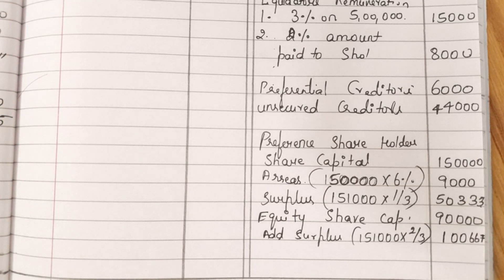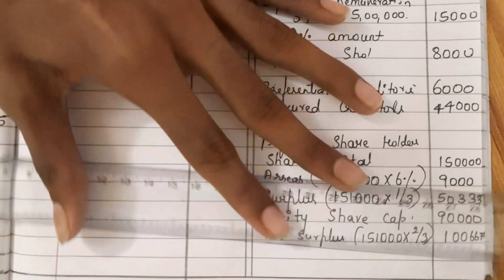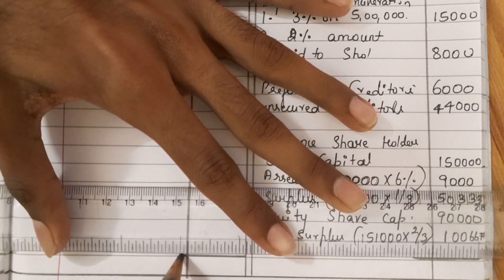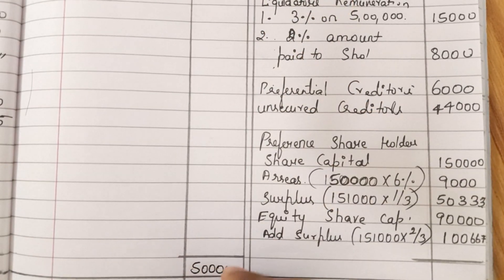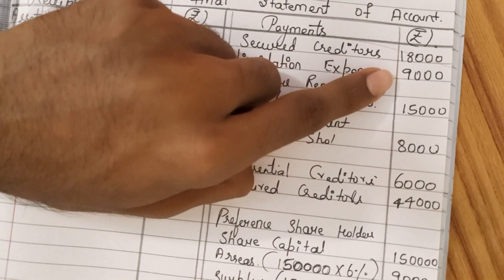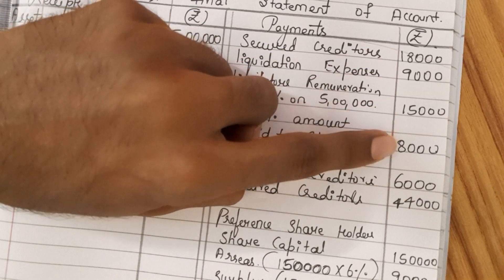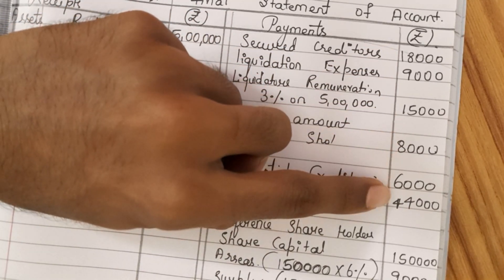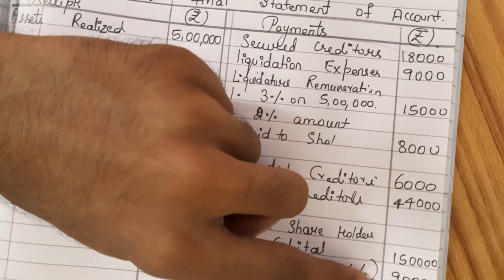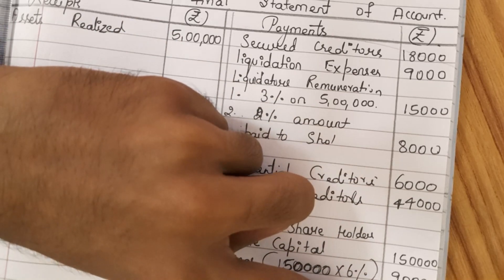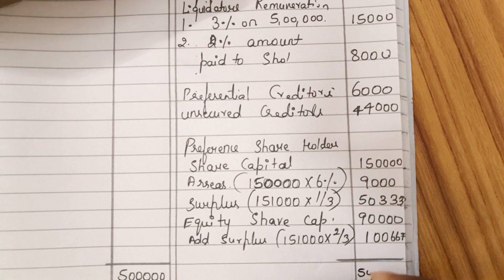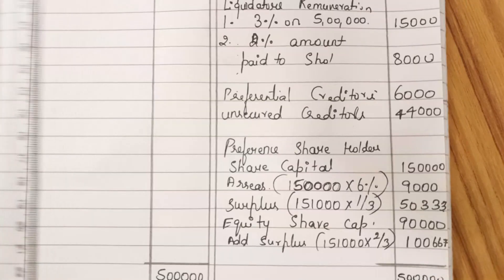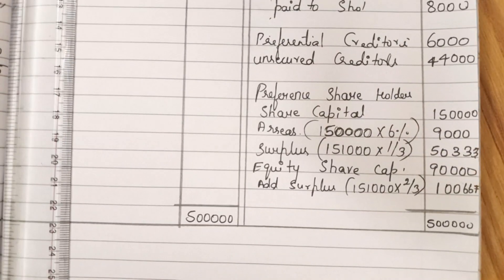We have distributed all items. Now we need to do the totaling on the asset side: 5,00,000. On the payment side, adding 18,000 plus 9,000 plus 90,000 plus 1,667 and all other items, the same amount tallied — that is 5,00,000. This is how you need to solve the problem. Hope you have understood this problem.